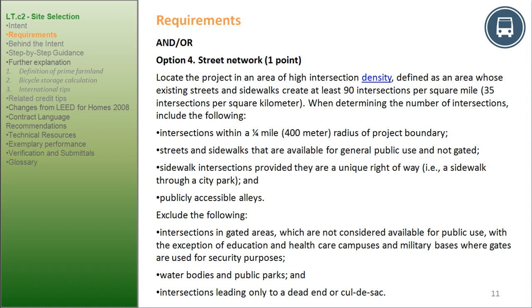Option 4, Street Network, for 1 point: locate the project in an area with at least 90 intersections per square mile (35 per square kilometer). When determining intersections, include: intersections within a one-fourth mile (400 meter) radius of the project boundary; streets and sidewalks available for general public use and not gated; sidewalk intersections that are a unique right-of-way (e.g., sidewalk through a city park); and publicly accessible alleys. Exclude intersections in gated areas (except education, healthcare campuses, and military bases), water bodies, public parks, and intersections leading only to dead-ends or cul-de-sacs.